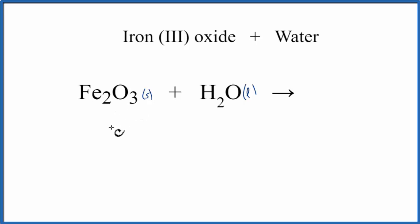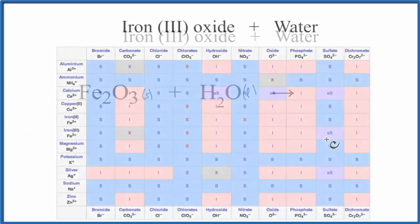And then oxygen is a nonmetal, so we have a metal and a nonmetal. We have an ionic compound. Often they're soluble in water, but we should check a solubility table just to make sure.